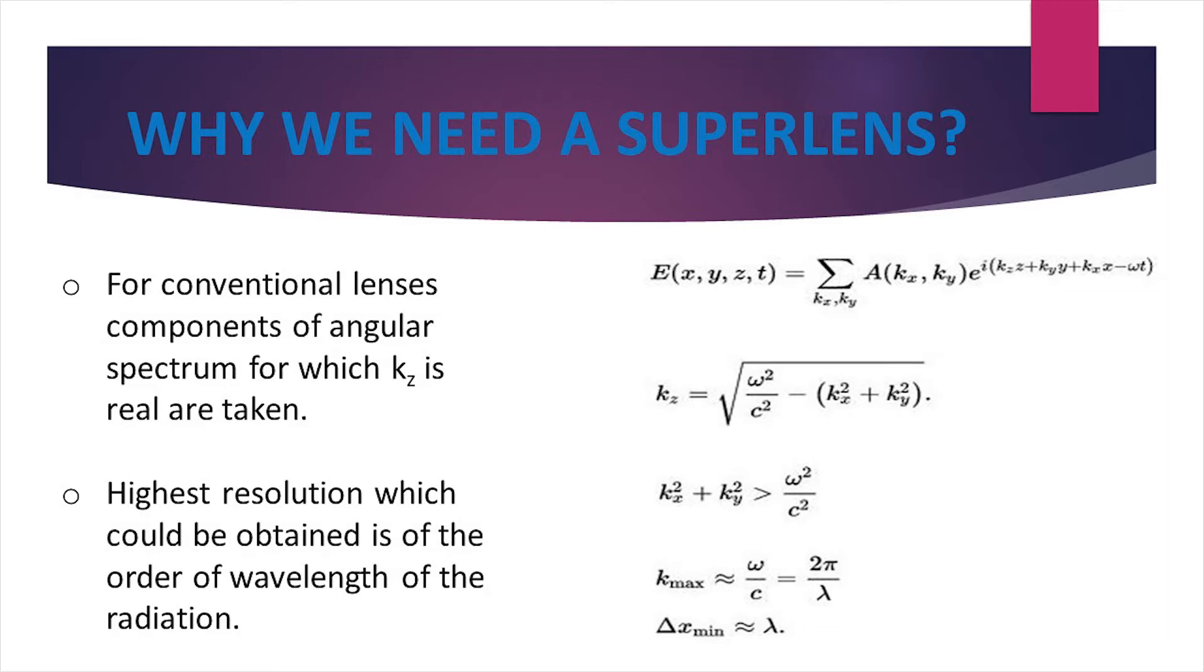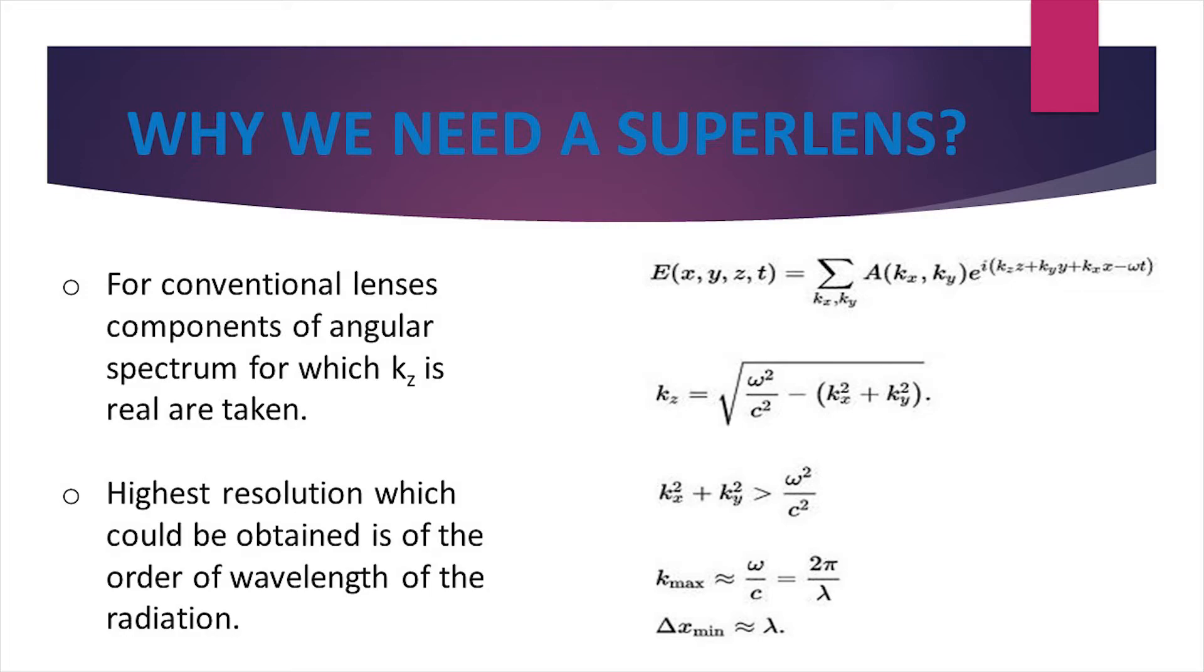Now, let us try to understand why a diffraction limit exists. The field emanating from the object can be written as a superposition of plane waves by the first equation of the figure. The second equation shows the relation between kx, ky, and kz.